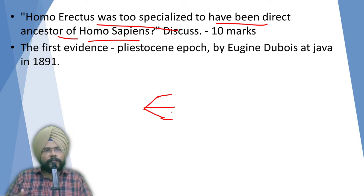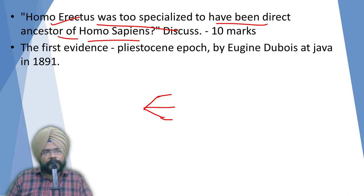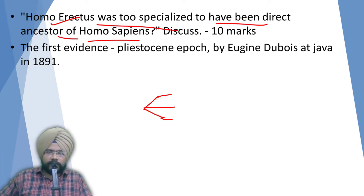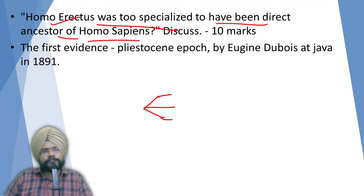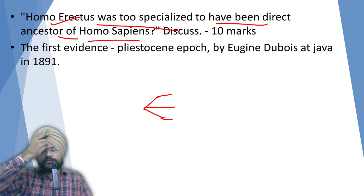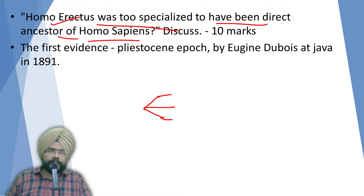Then gradually bipedalism developed, and it was properly developed during the time of Homo erectus. 'Homo' means man, 'erectus' means one who can stand like a man - properly bipedal, properly adapted to bipedalism. Neither Homo habilis was properly adapted to bipedalism, but Homo erectus had well-developed bipedalism.